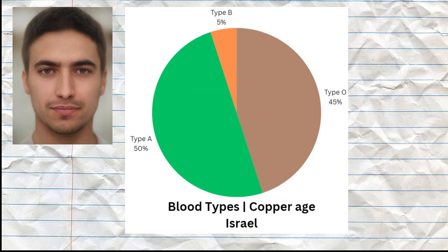The most common blood types among the 20 Copper Age samples were type A, followed by type O, and one sample was predicted to exhibit type B blood type. No samples were predicted to exhibit blood type AB.